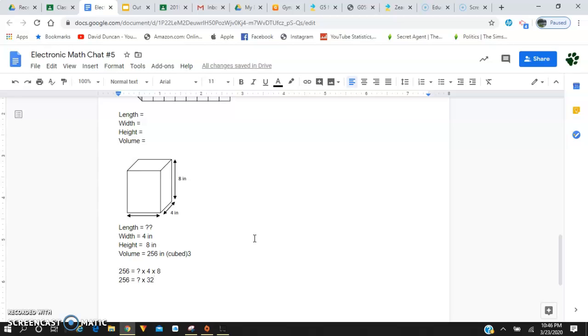From there, what can I do to figure out what that missing length is? I have 256 equals something times 32. I'm going to leave the rest of that up to you guys to figure out what that missing length is right there. Go ahead and type in what the missing length is. Make sure you label it as inches because in this case we are working strictly with inches.